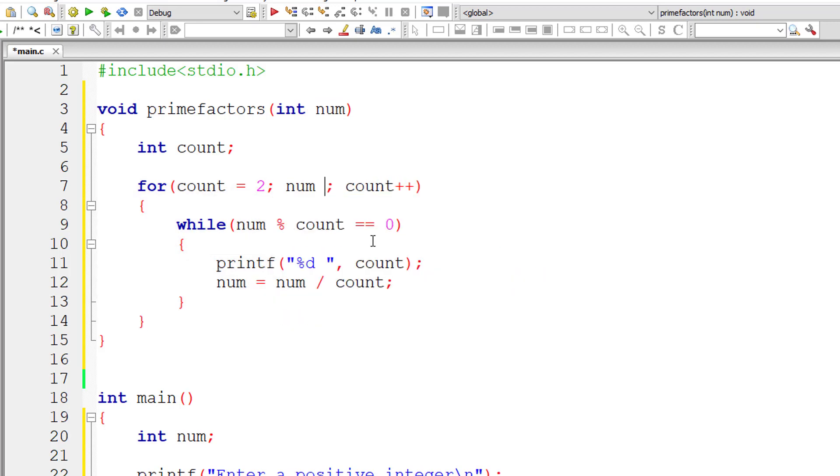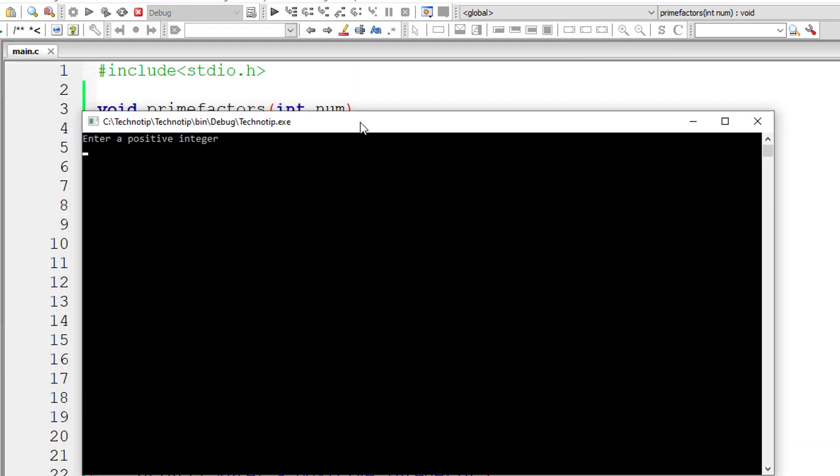Now the condition, num should be greater than 1 until then this for loop gets executed. Remember, we reduce the value of num inside while loop. Num is equal to num divided by the value of count. So that's it. That's the logic for this entire program to get prime factors of a user entered number.